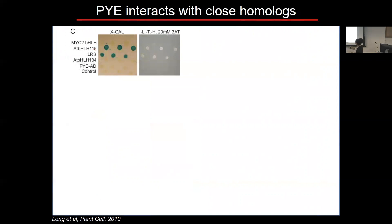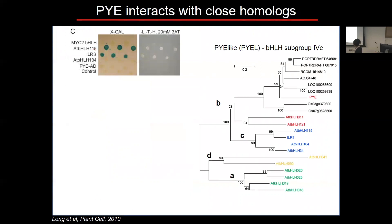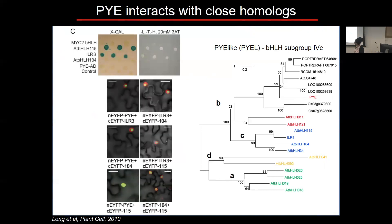We did BiFC analysis to confirm that Popeye and ILR3 interact, specifically in the nucleus. We also confirmed that Popeye interacts with other homologues identified in our yeast two-hybrid analysis. So Popeye is a transcription factor controlling many things, and it interacts with Popeye homologues in the nucleus.